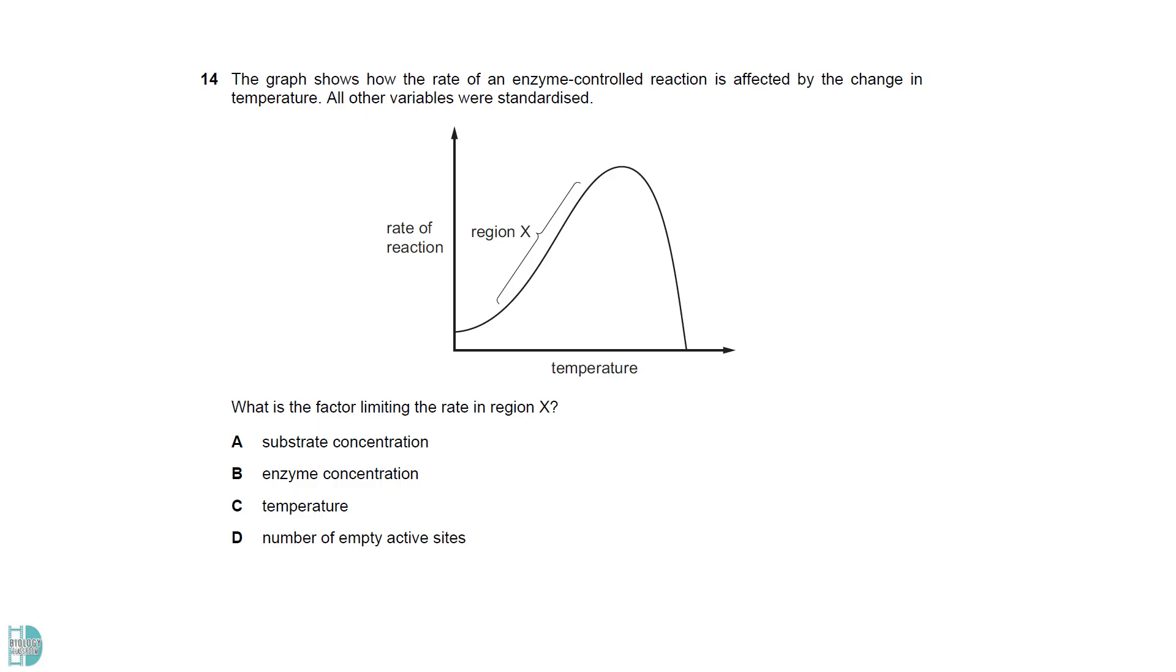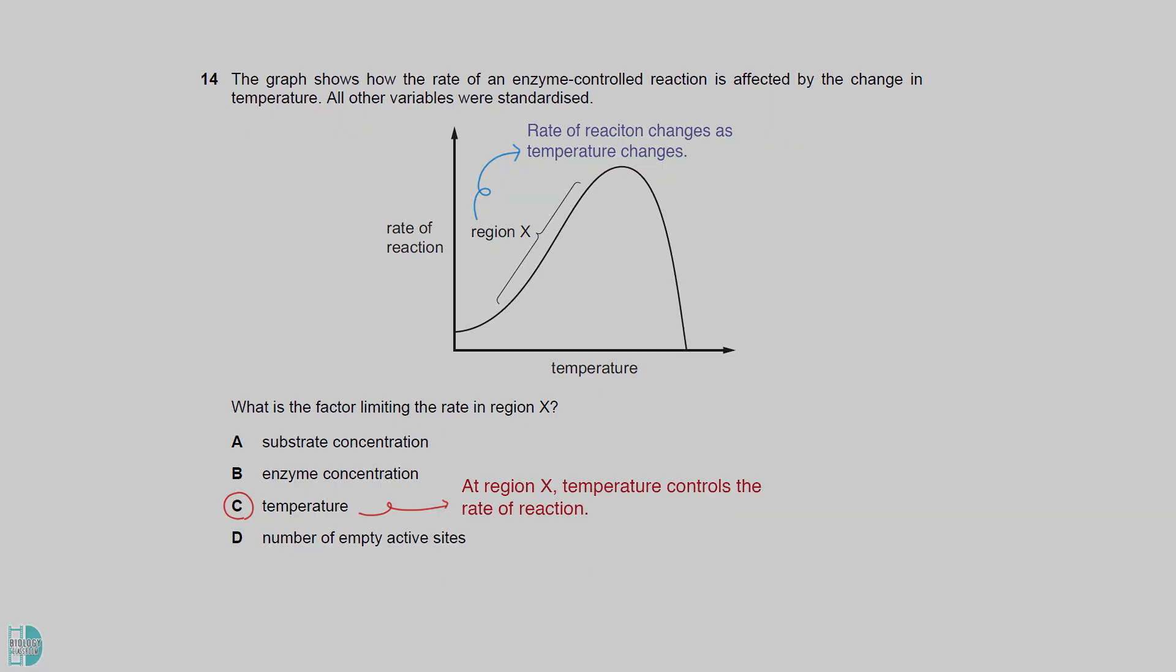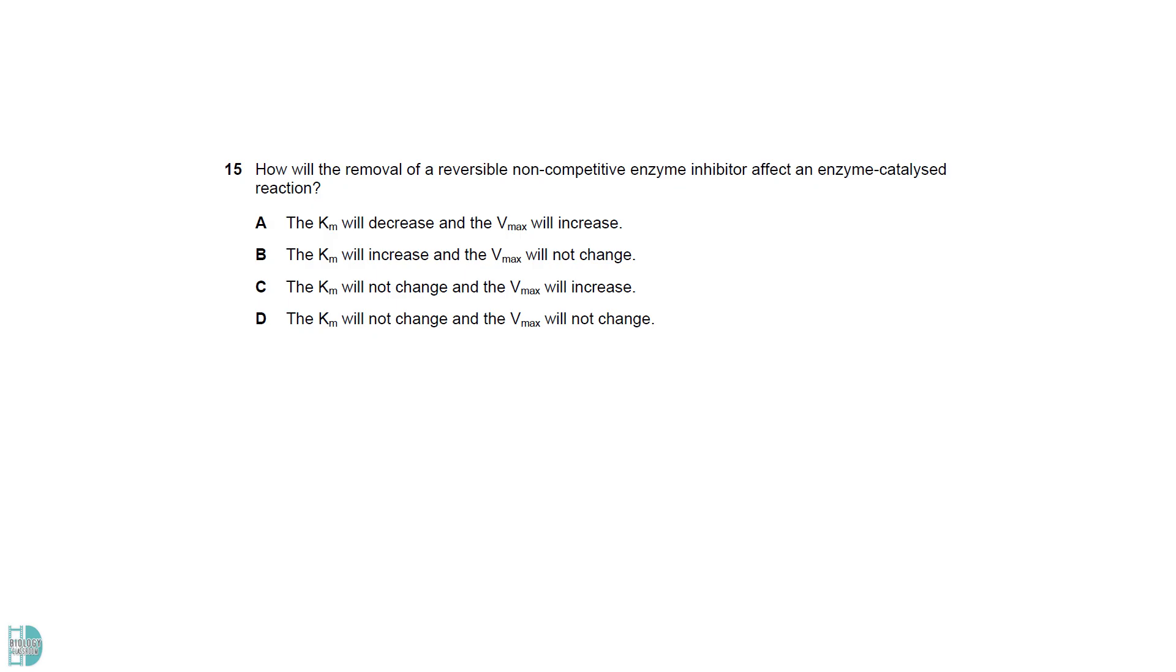At region X, the rate of reaction changes as temperature changes. The fact that it is controlled by temperature shows that temperature is the limiting factor. A non-competitive inhibitor reduces the Vmax but does not affect the Km. So, its removal will increase the Vmax but does not affect Km.